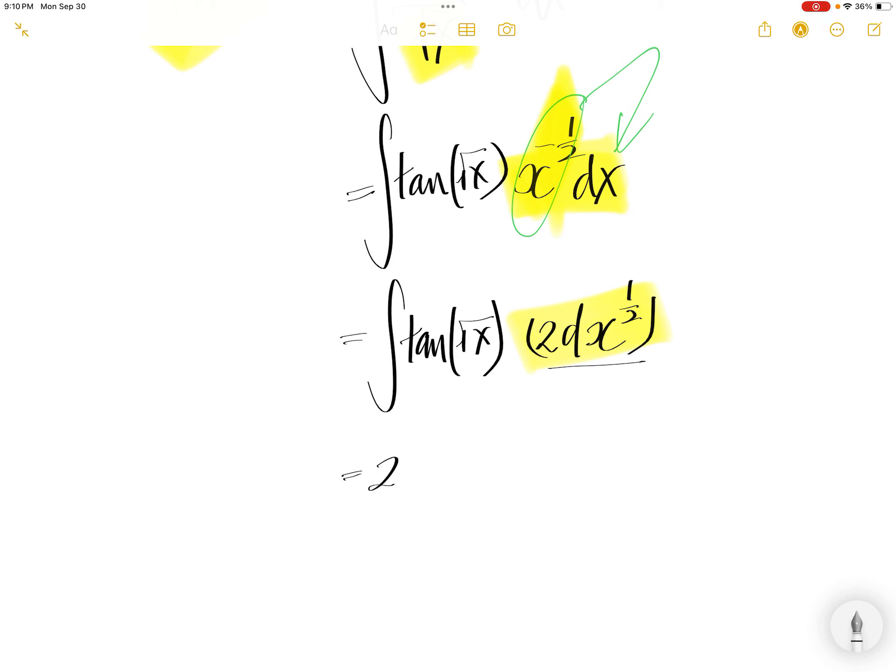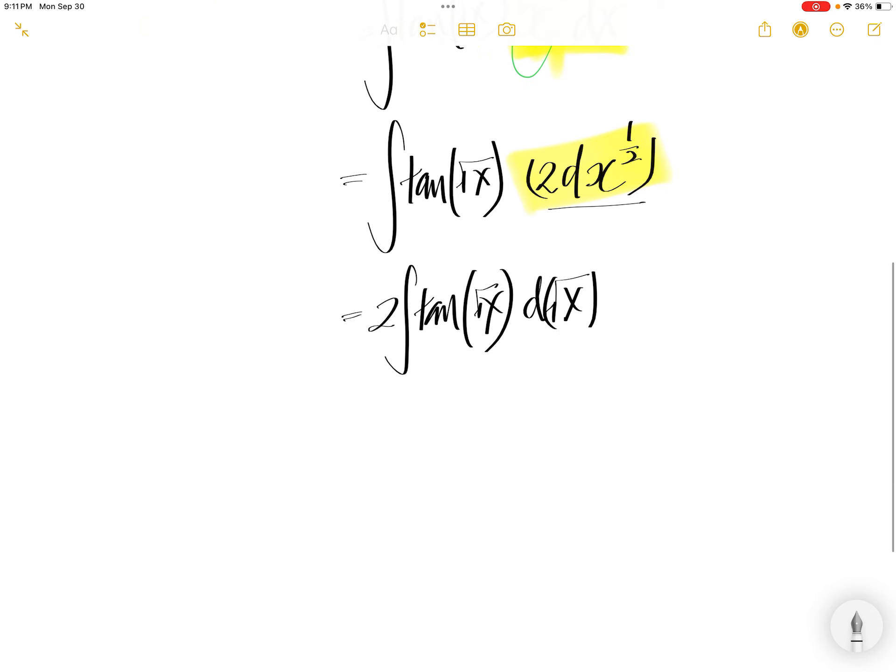Two, the constant, out of the integral, and then you have tangent square root x, dx to the power of half. But we can write it as square root x back again, correct?